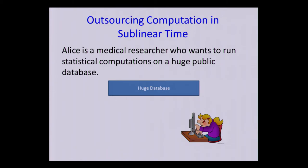So the setting that I want to consider is the following. We have Alice, who let's say is a medical researcher or a social scientist, and she has access to some huge database. So if she's a medical researcher, some public health information, or maybe it's the Twitter graph if she's a social scientist.